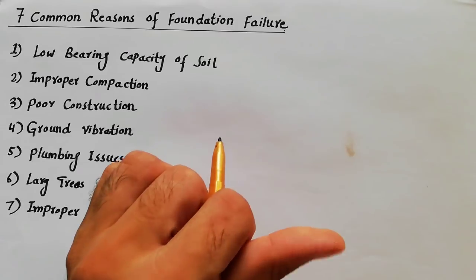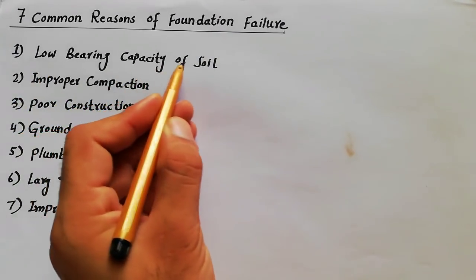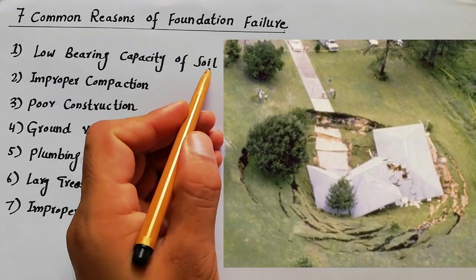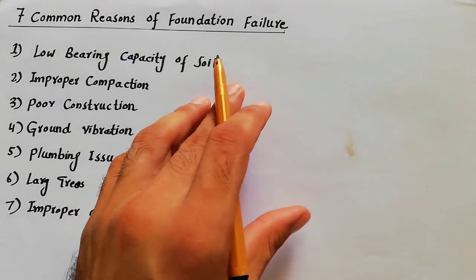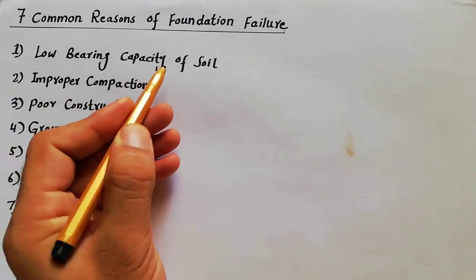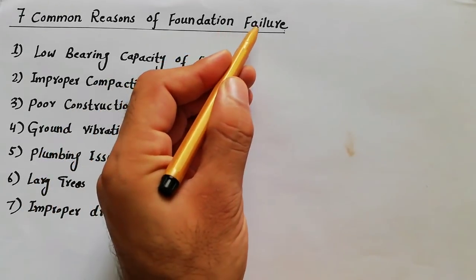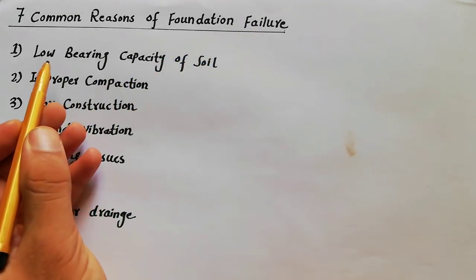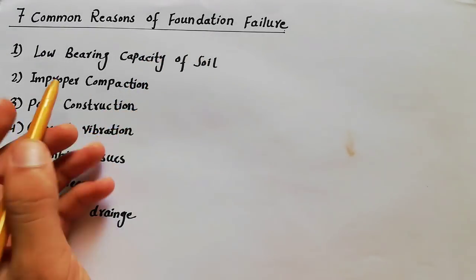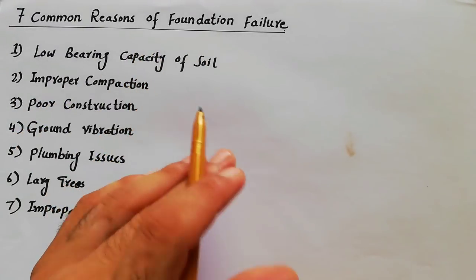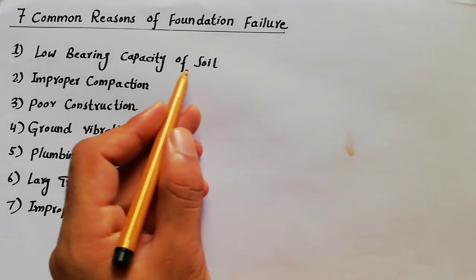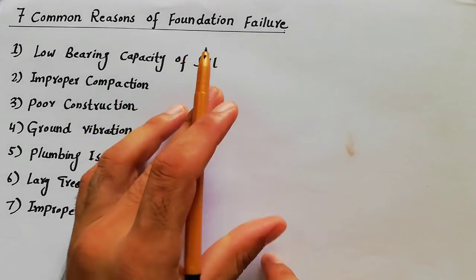The first reason is low bearing capacity of soil. We know that we have different types of soil, and different types of soil have different bearing capacity. Low bearing capacity is the main reason of foundation failure. If your foundation or your building site has low bearing capacity, then we have to improve the bearing capacity of soil.